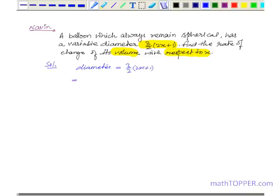This implies the value of radius is just half of the diameter, that is 3/4 into (2x + 1).